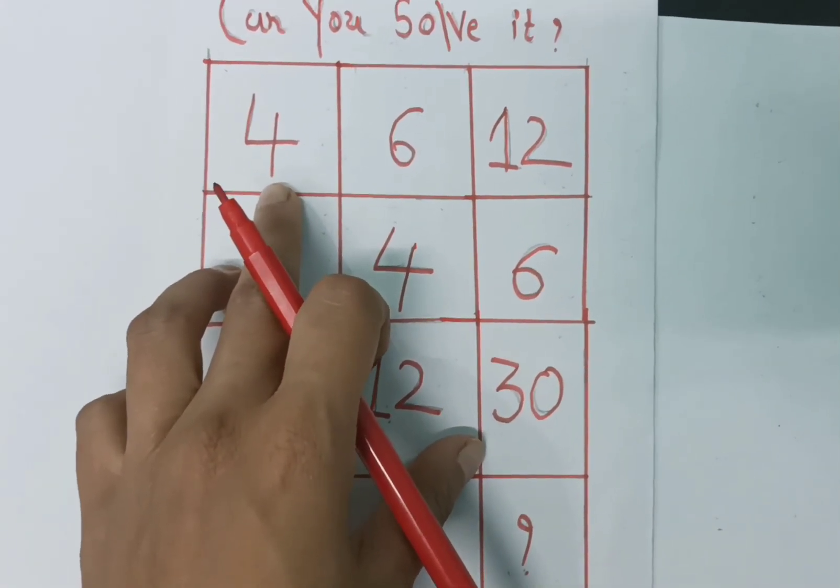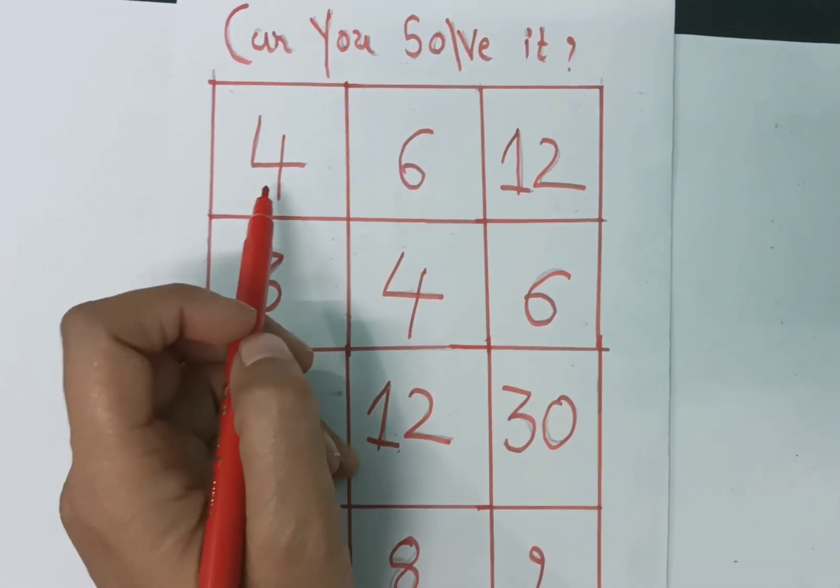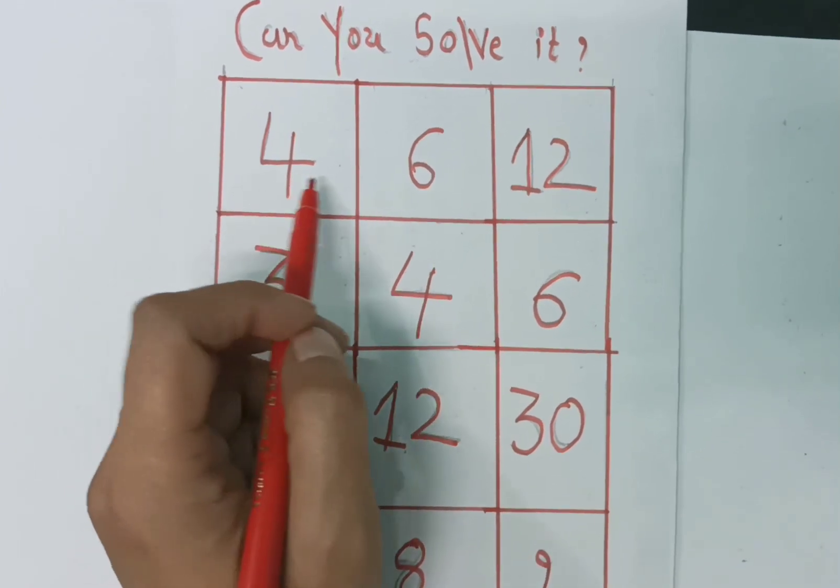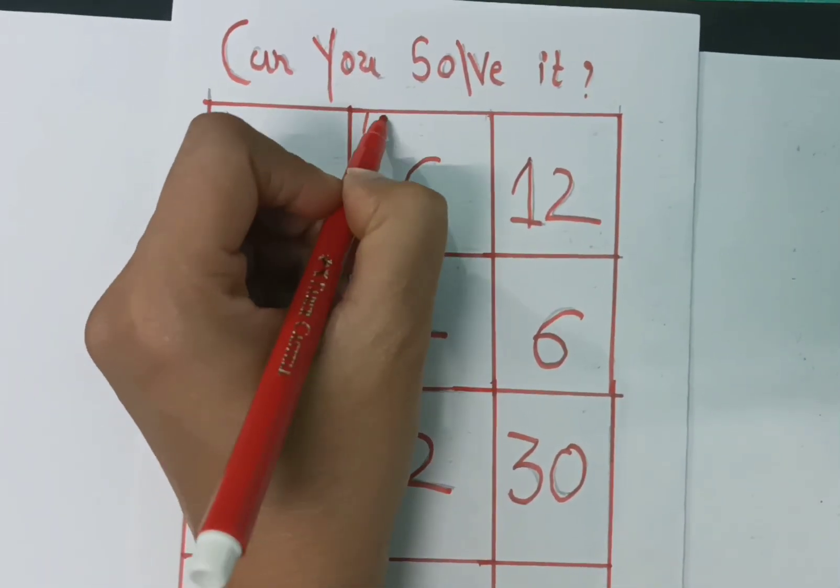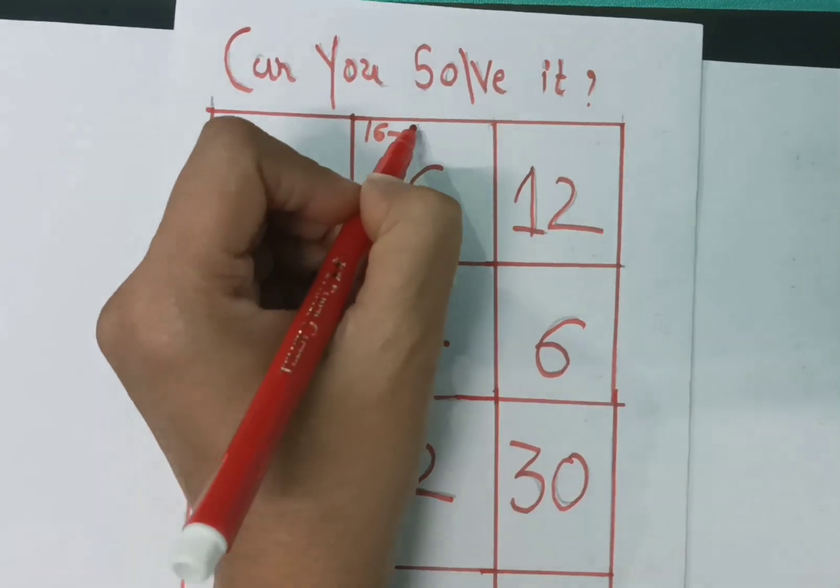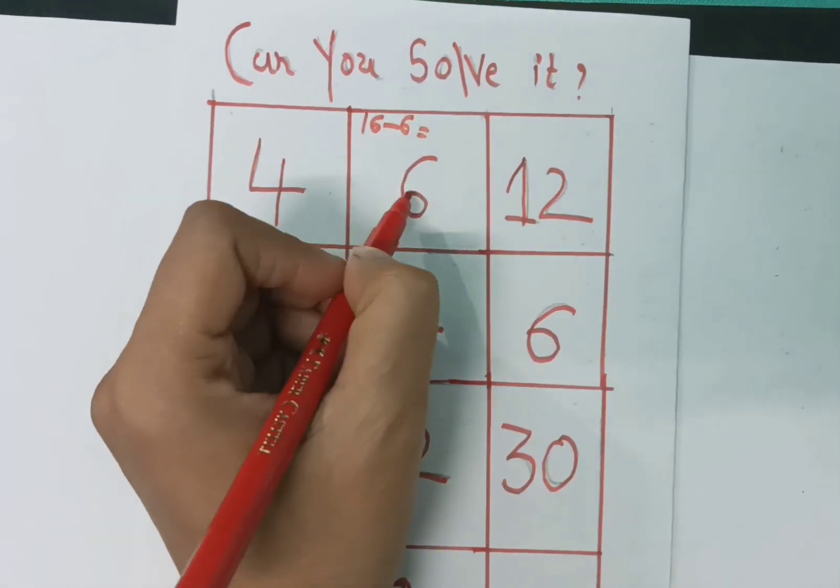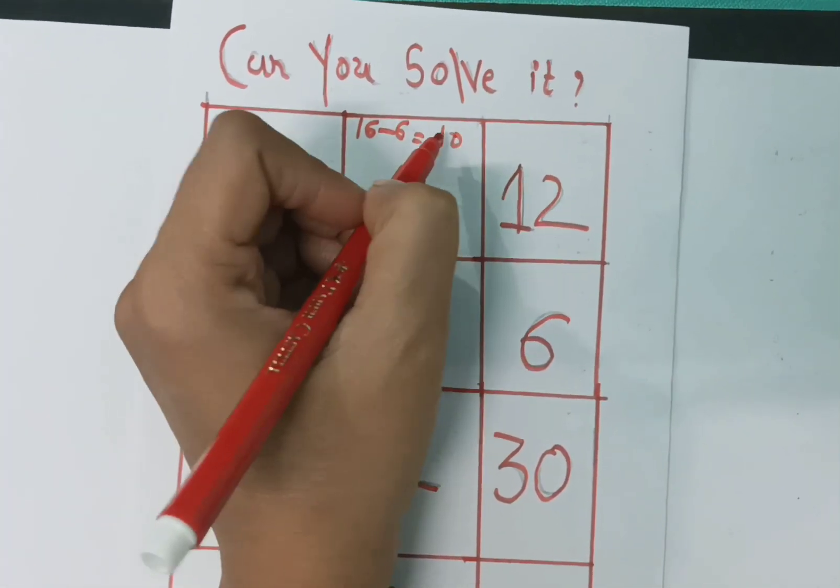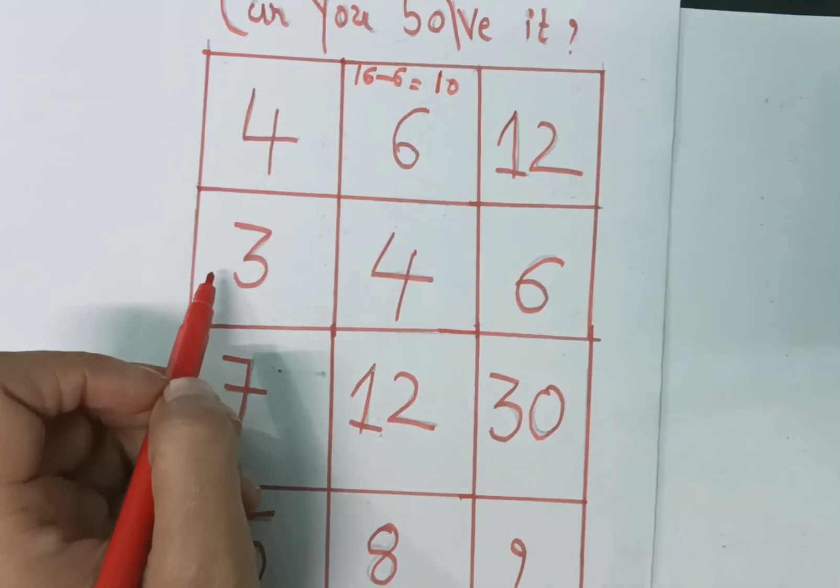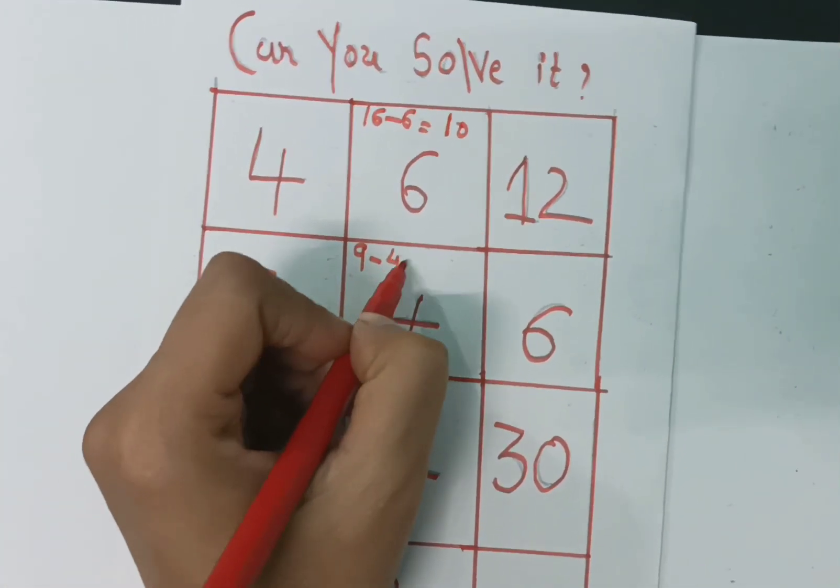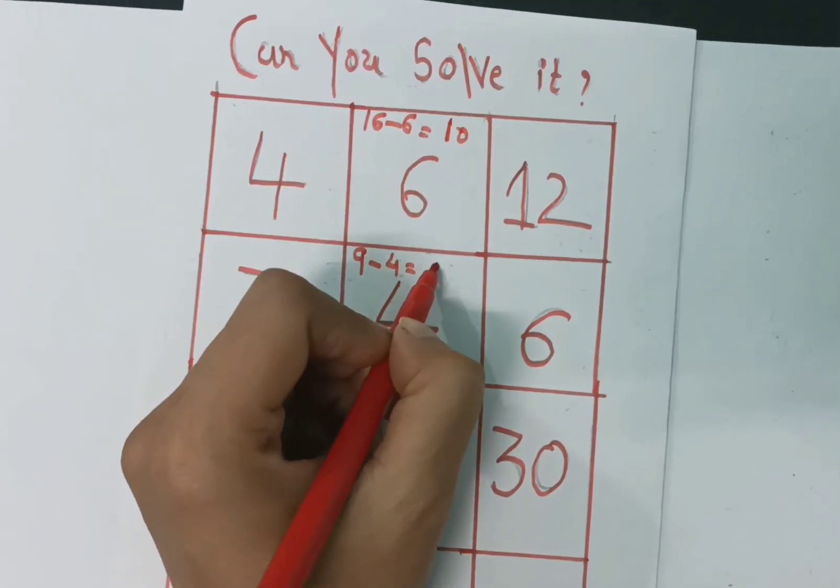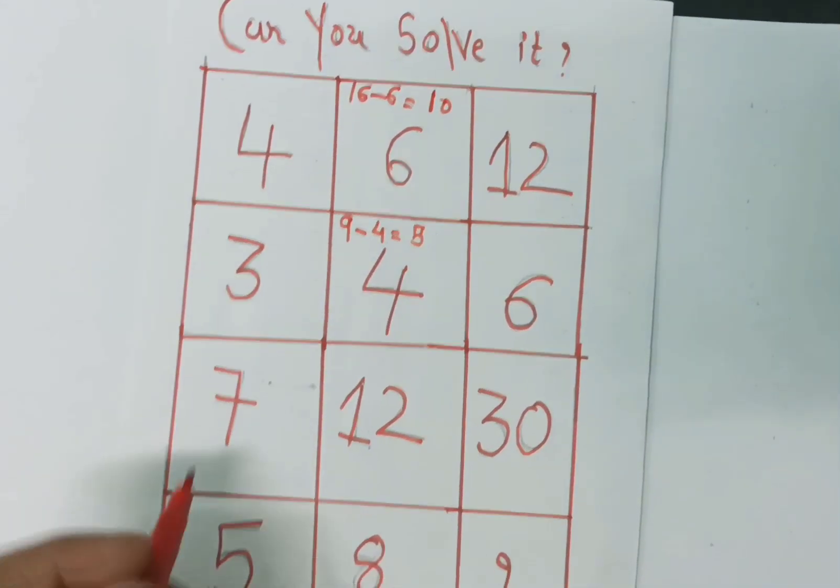square or cube. If we take 4 square, then 4 square is 16, and 16 minus 6, we get 10 here. 3 square is 9, and subtract 4, so we get 5 here.